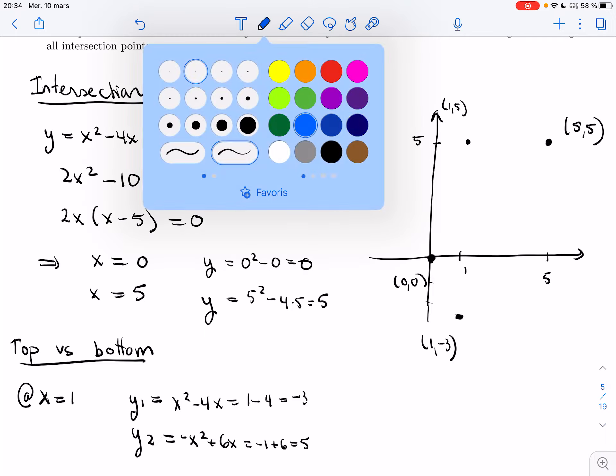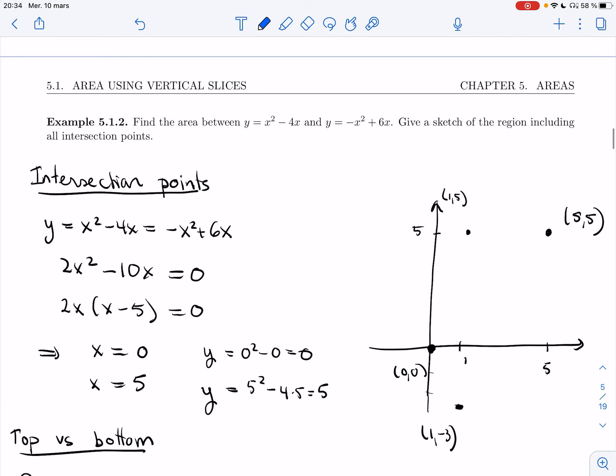Alright, so it's pretty clear. Let me label this one in blue. So the blue curve is going to be way up top. And then the green curve is going to go down.